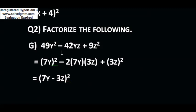Question number 2: factorize 49y² - 42yz + 9z². Here, the first term and the last term are perfect squares, but the middle term has a negative sign. This means you can factorize the expression using the second identity: (a - b)² = a² - 2ab + b². Note that 49y² can be written as (7y)² and 9z² can be written as (3z)².